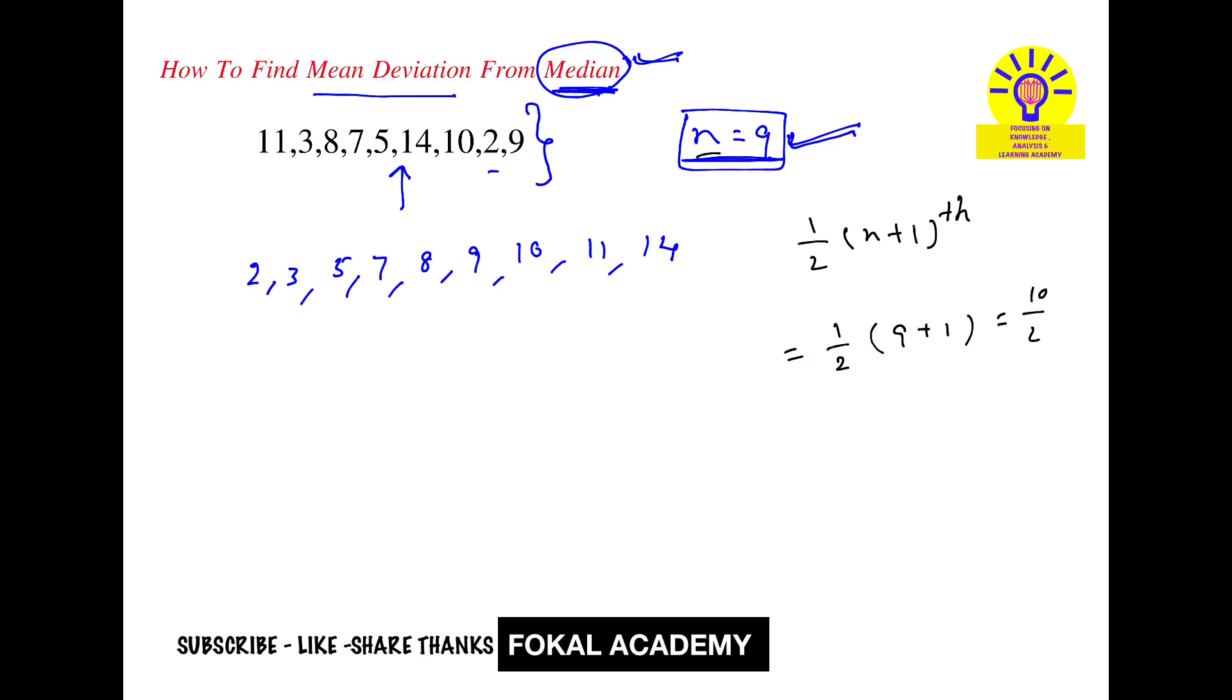The fifth observation is the median. This is the first observation, second, third, fourth, fifth. So the fifth observation is 8, therefore median is 8. According to the problem, we want mean deviation with the help of median.